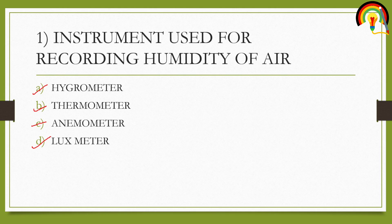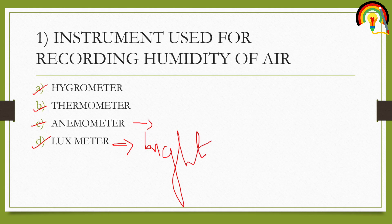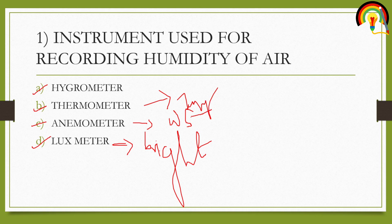The lux meter is used to measure brightness. The anemometer is used to measure wind speed. The thermometer is used to measure temperature. That leaves only one option — the hygrometer — which is mainly used to measure or record the humidity of air. So the answer for the question is option A, hygrometer.